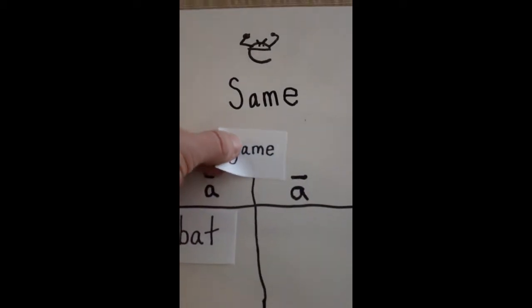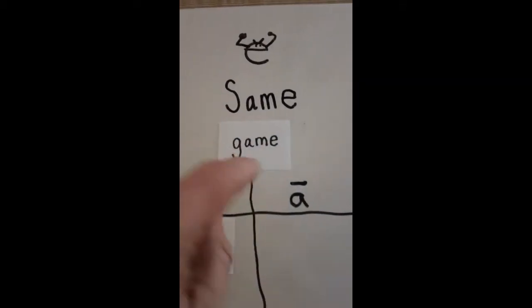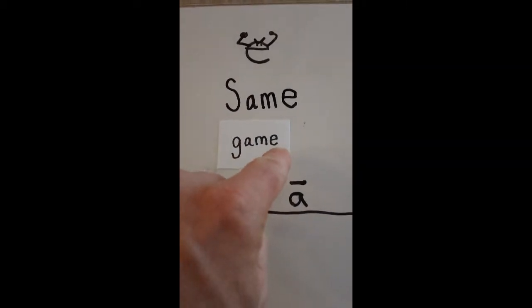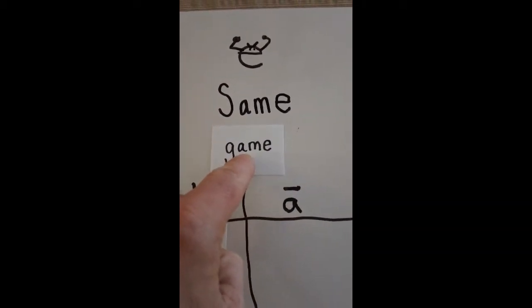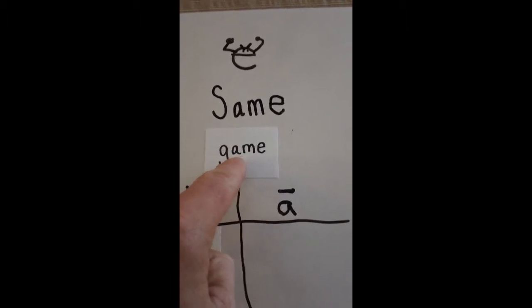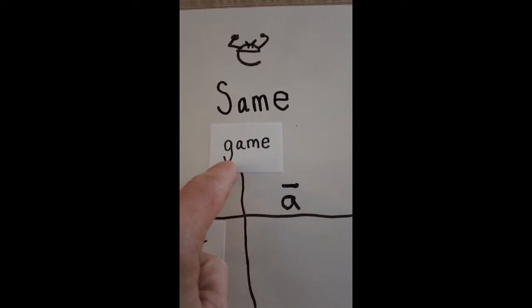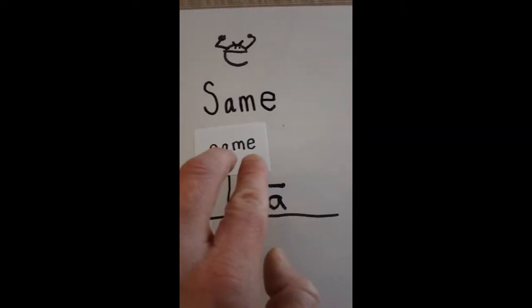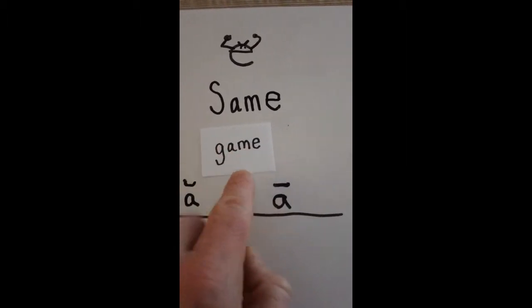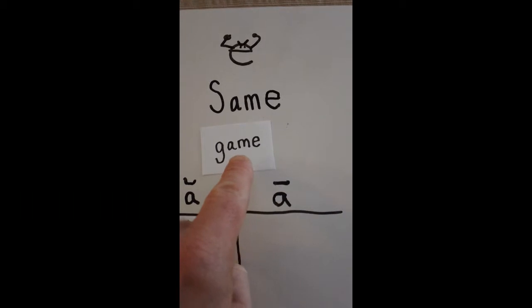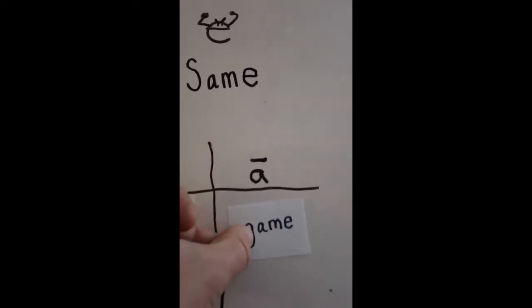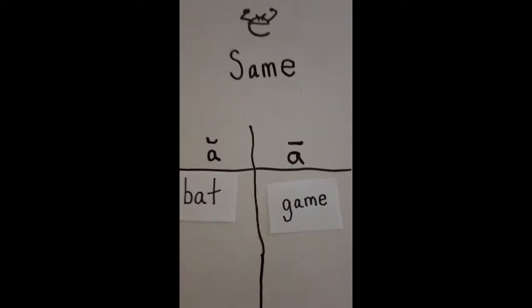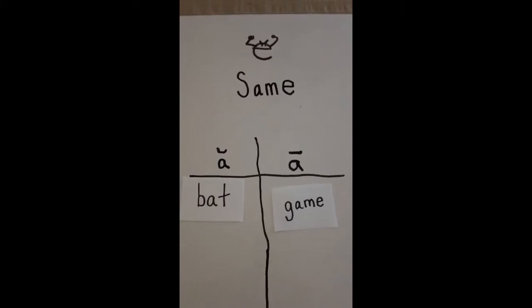With the word game, there is a bossy E. So the A doesn't say a short A, it says its name: A. G-A-M-E. Game. So it will go on this side with the long A sound.